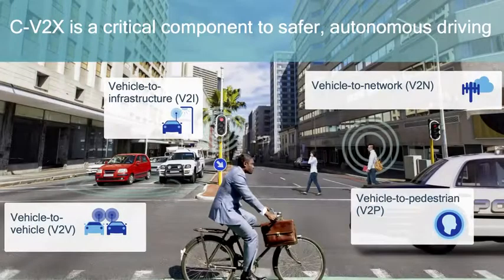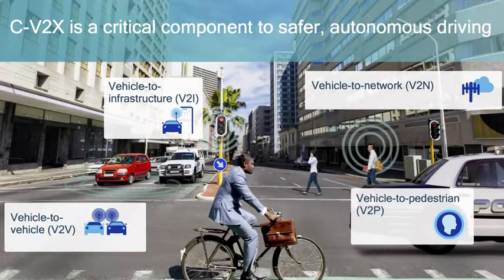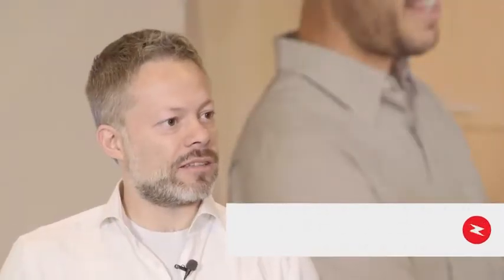So this is a new system that we defined in 3GPP as part of Release 14. It is basically a transport layer and alternative to 802.11p, which is a technology that has been developed over the last 10 years for car-to-car communication.